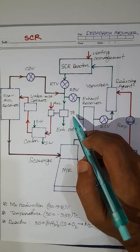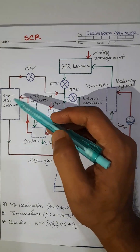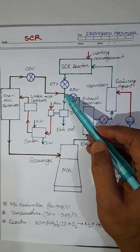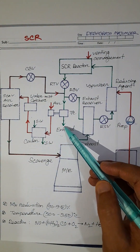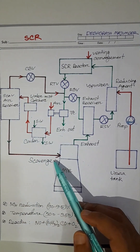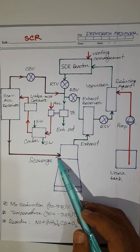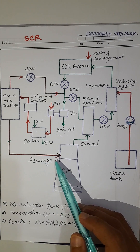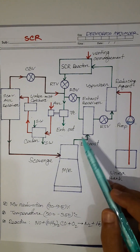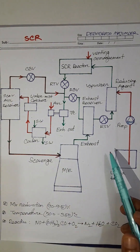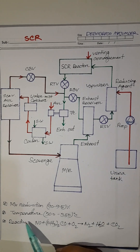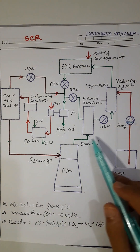At low load operation, some scavenger is bypassed through the exhaust gas and scavenger pressure decreases. Due to the decrease in scavenger pressure, the exhaust gas temperature is increased. By this way, the system maintains the exhaust gas temperature.